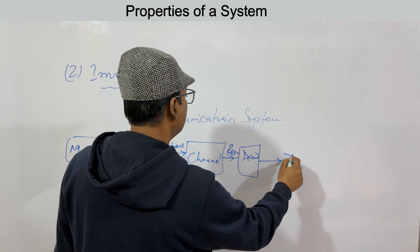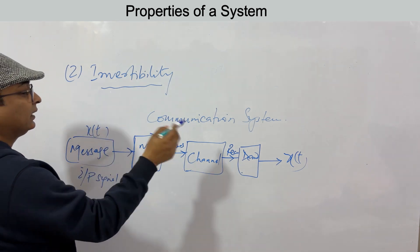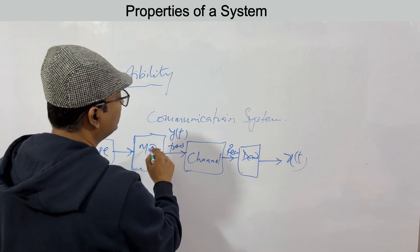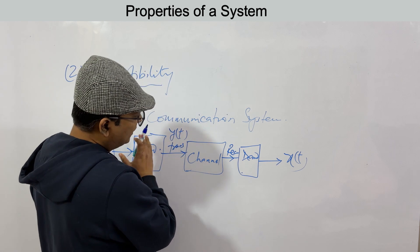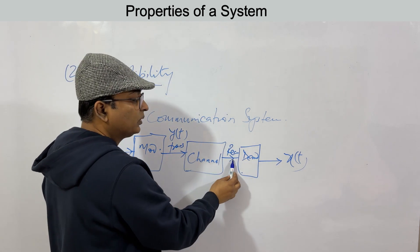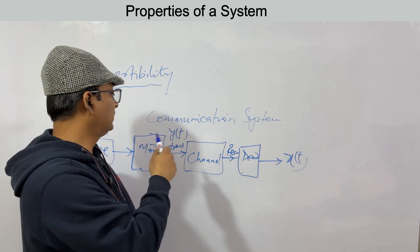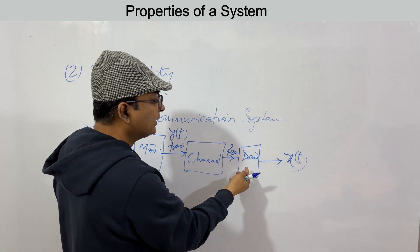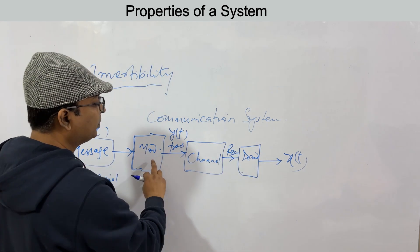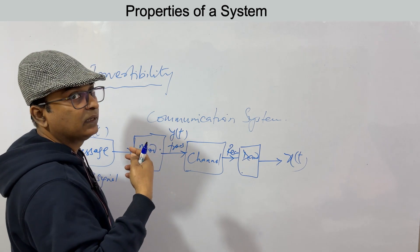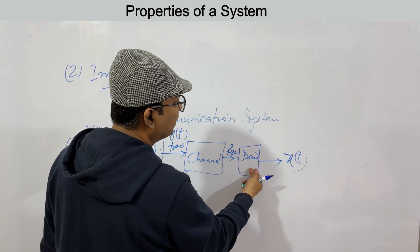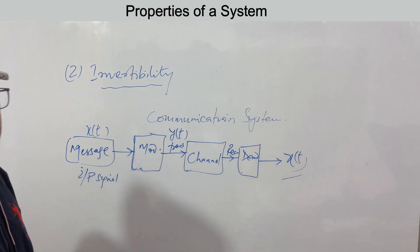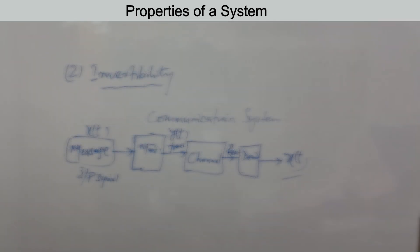So if x(t) was modulated to y(t), transmitted from a transmitter antenna through air to a receiver antenna, then demodulation reverses the process to recreate x(t). This is the property of invertibility — recreating the original signal from the output signal.